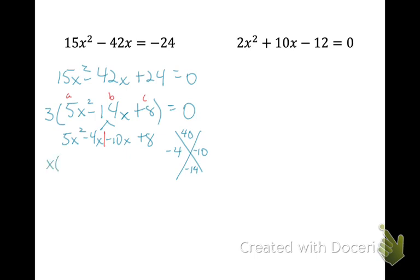Then I'm going to group the first two and the last two terms together by drawing a short dividing line. I can factor out an x, and I'm left with 5x minus 4. I can factor out a negative 2, and I'm left with 5x minus 4. Now I've got a common expression of 5x minus 4, which I'm going to factor to the front, and when I divide that out, I am left with x minus 2.